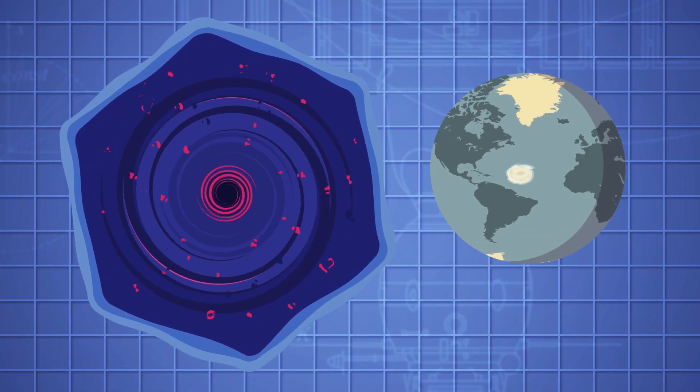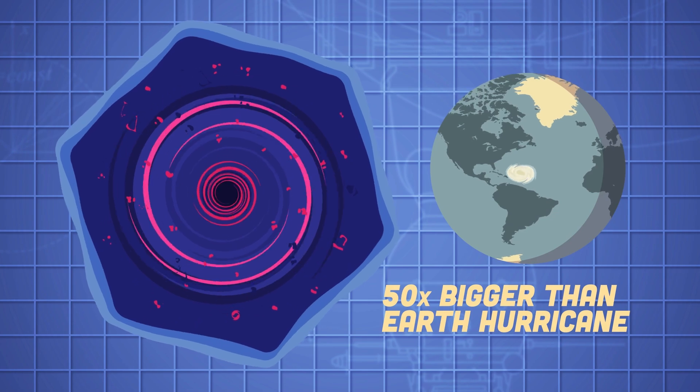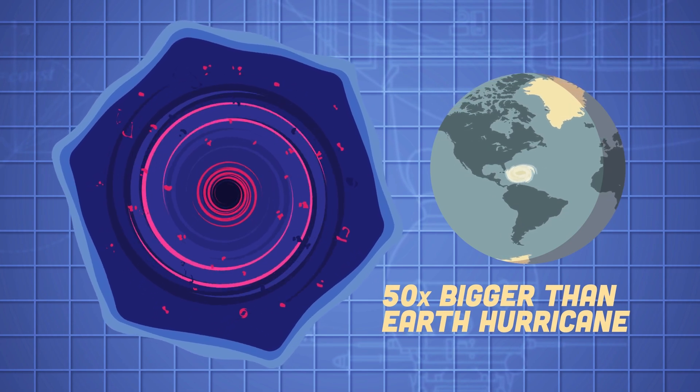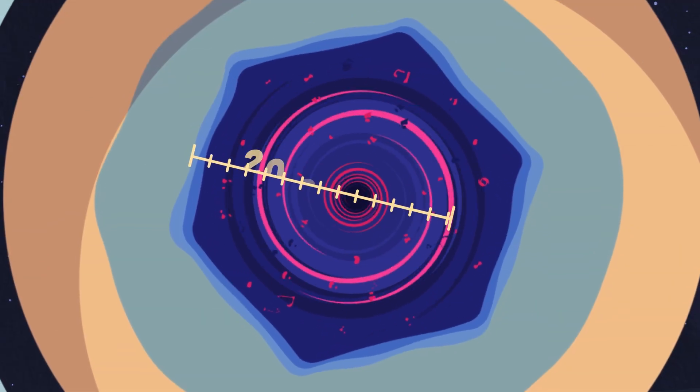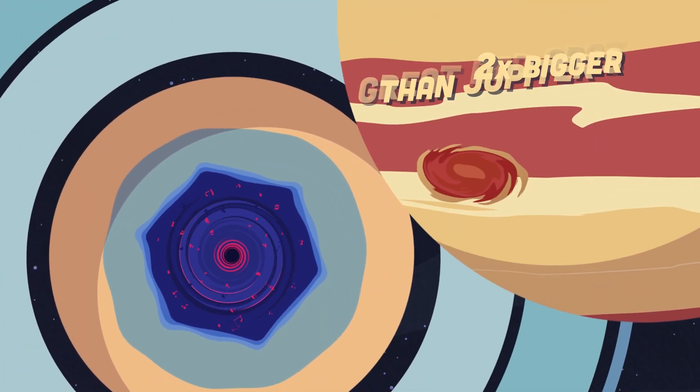The eye of this hurricane is 50 times larger in force than an average hurricane eye that exists on Earth. The storm's about 20,000 miles in diameter, which is twice the size of the Great Red Spot on Jupiter.